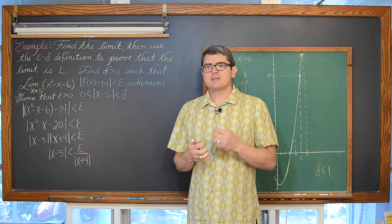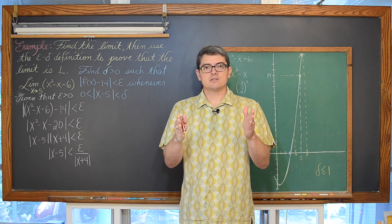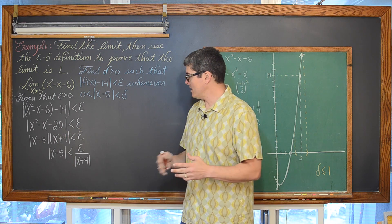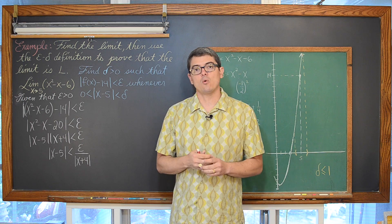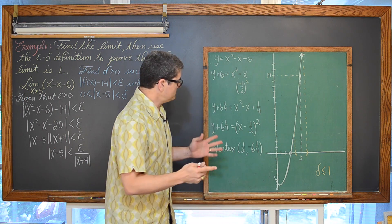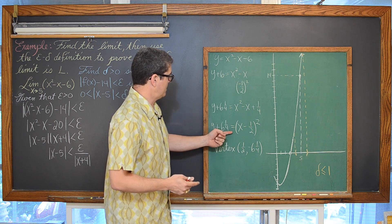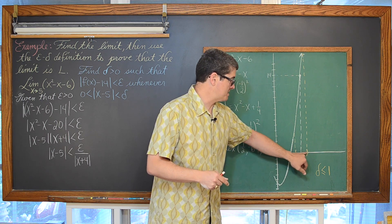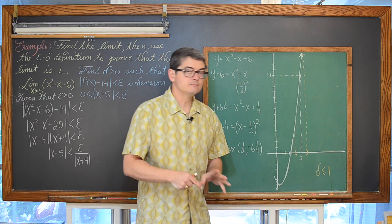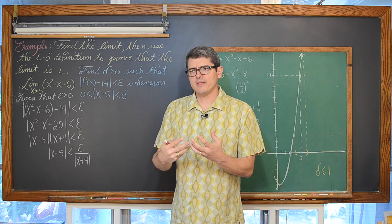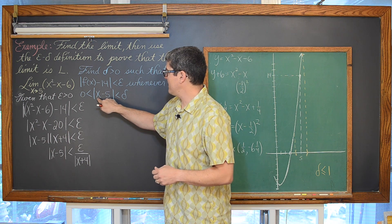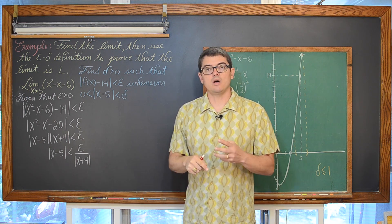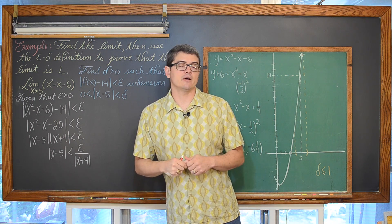What we need to do is set a limit on delta — set a maximum distance from the value of c (some books call that 'a') that we are willing to use for the proof, and then find the maximum value that the absolute value of x plus 4 is going to take on. We set delta to be a maximum of 1. So the absolute value of x minus 5 is less than 1, which as a compound inequality, adding 9 to all three parts gives x plus 4 between 8 and 10. The maximum value x plus 4 can take on is 10, so the absolute value of x plus 4 is less than 10.